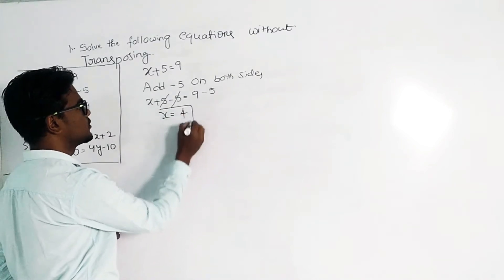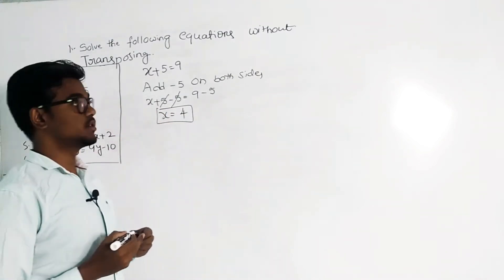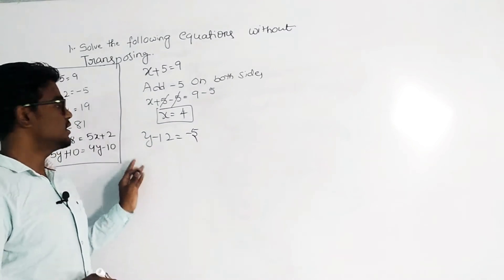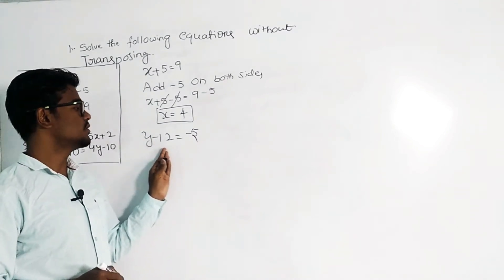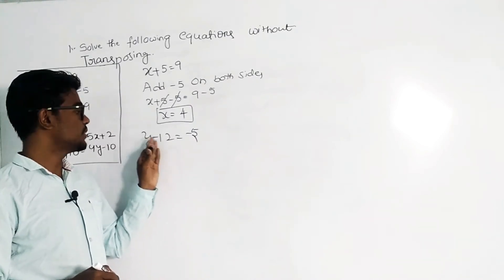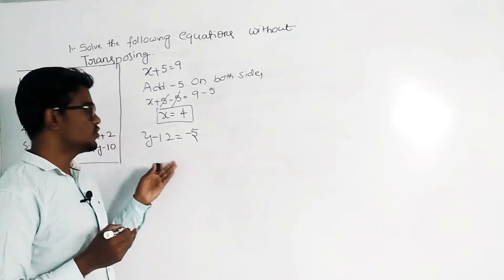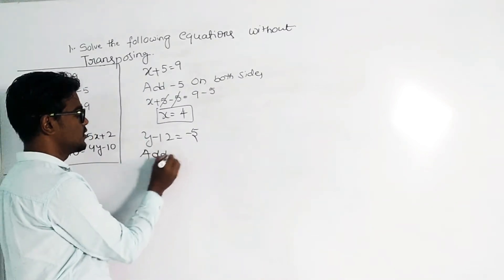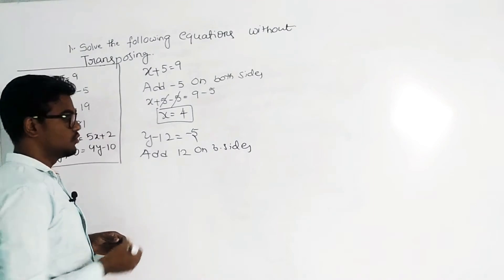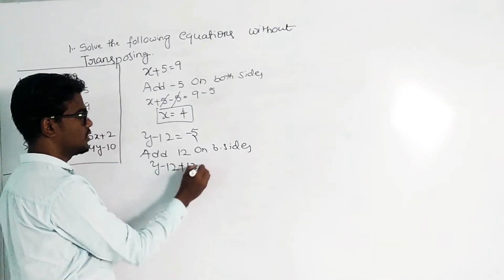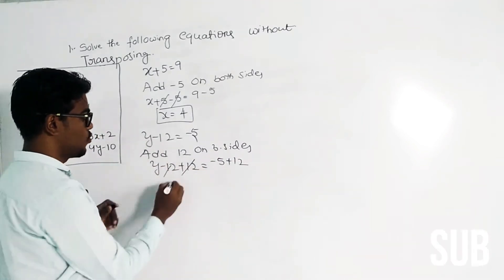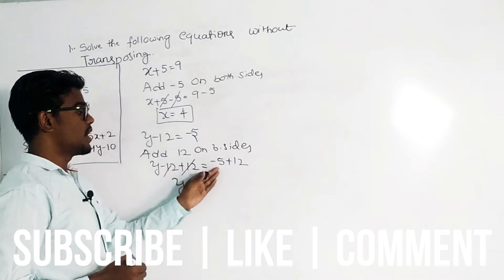So x equals 4. That is the answer without transposing. Next one is y minus 12 equals minus 5. The extra term on the left side is minus 12, so we add plus 12 on both sides. y minus 12 plus 12 equals minus 5 plus 12; the minus 12 and plus 12 cancel, leaving y equals 7.